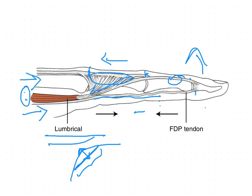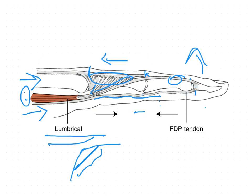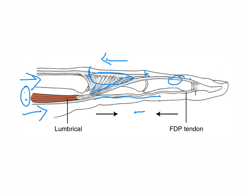As a whole, the function of the lumbricals is simpler than that of the interossei. The lumbricals are strong extensors of the IP joint regardless of MCP joint position, and they are relatively weak MCP flexors regardless of MCP joint position. The ability of the lumbricals to extend the IP joints appears to depend only on intact tension in the extensor mechanism and in the FDP tendons. In the next session, we will discuss the structure of the thumb, its joints, and its musculature.